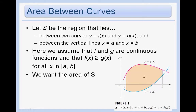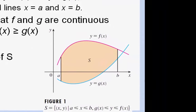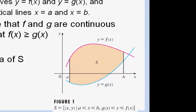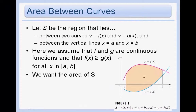We'll be able to find the area of the region S, which in this example lies between two curves, y equals f of x and y equals g of x, and between the vertical lines x equals a and x equals b. We're assuming that f and g are continuous functions and that f of x is greater than or equal to g of x over the whole interval. Our goal is to find the area of this region S.